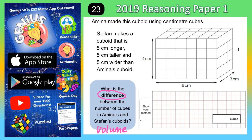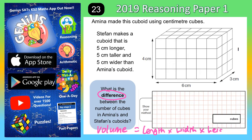You should know that the volume of a cuboid is the length times the width times the height. You can't really count all of the cubes here because some of them are at the back of the cuboid, so you can't actually see them all anyway. So we need to use the formula: length times width times height.